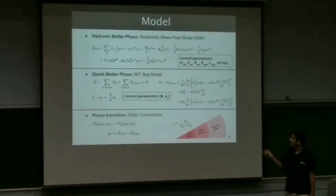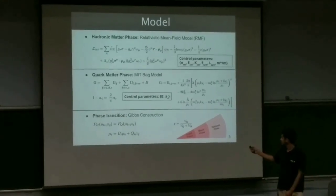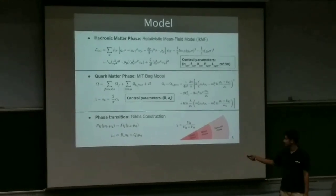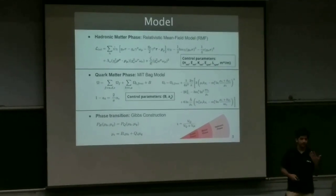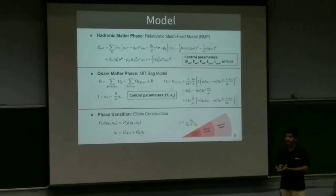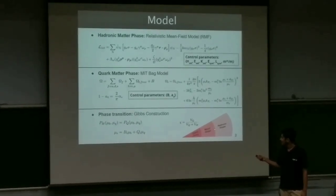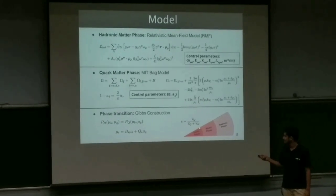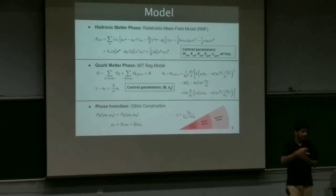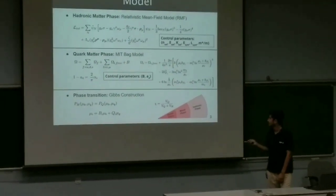And to model the phase transition from hadronic phase to quark, we use Gibbs construction, which says that we have two conserved quantities, the baryon number and the electric charge, which allows for a mixed phase where the transition begins at this interface and ends here. And as we go inside, as we go at higher densities, we get higher quark content.